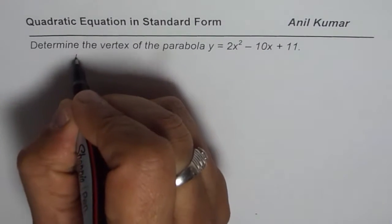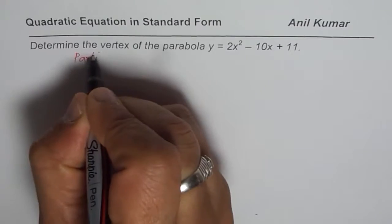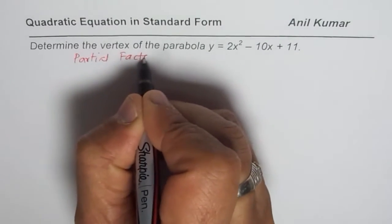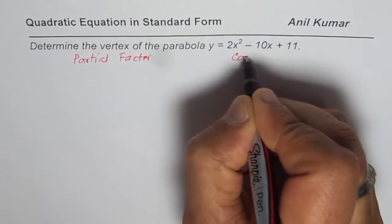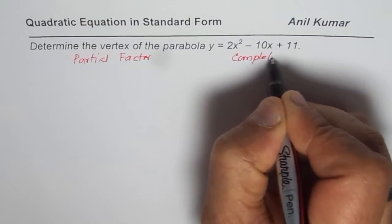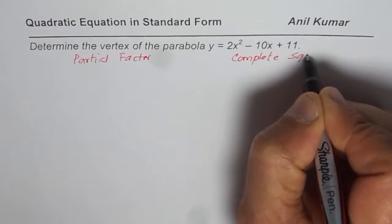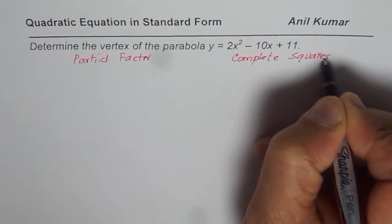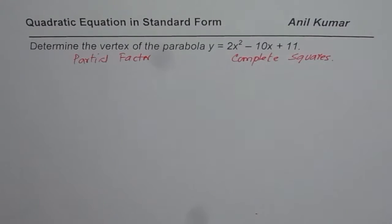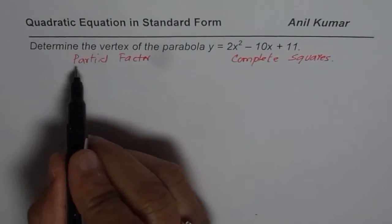One we say partial factoring and the second one is completing the square. Both methods are equally good to solve such equations. So let me show you how to use these methods. Let me begin with partial factoring.